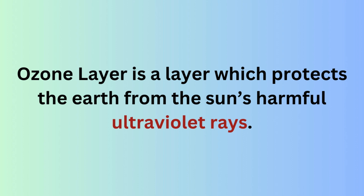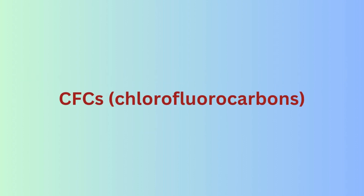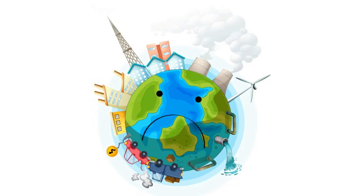The ozone layer is a layer which protects the earth from the sun's harmful ultraviolet rays, and is an extremely important layer for the earth. However, over time it is being destroyed by CFCs, that is chlorofluorocarbons, which are used in industries and everyday life. The chlorine present in these compounds destroys the ozone layer.